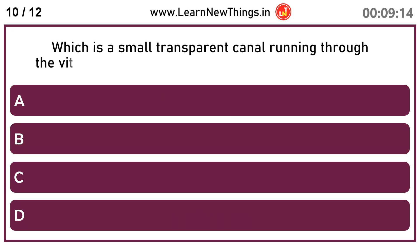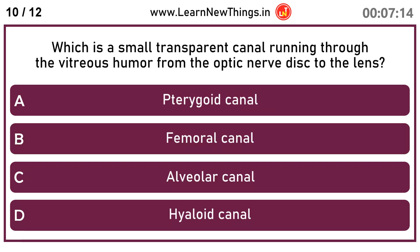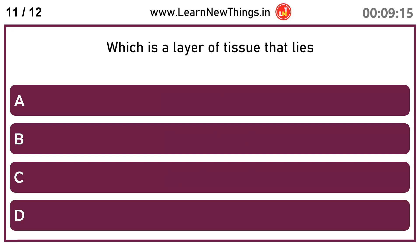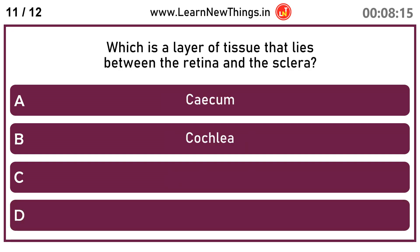Hyaloid canal, which is a small transparent canal running through the vitreous humor from the optic nerve disc to the lens. Choroid, which is a layer of tissue that lies between the retina and the sclera.